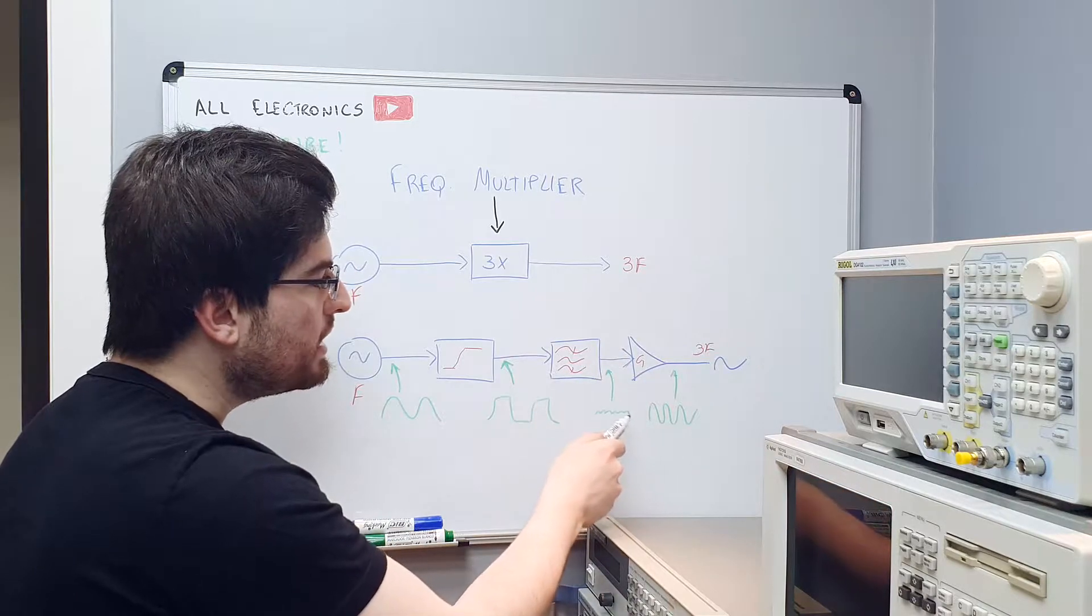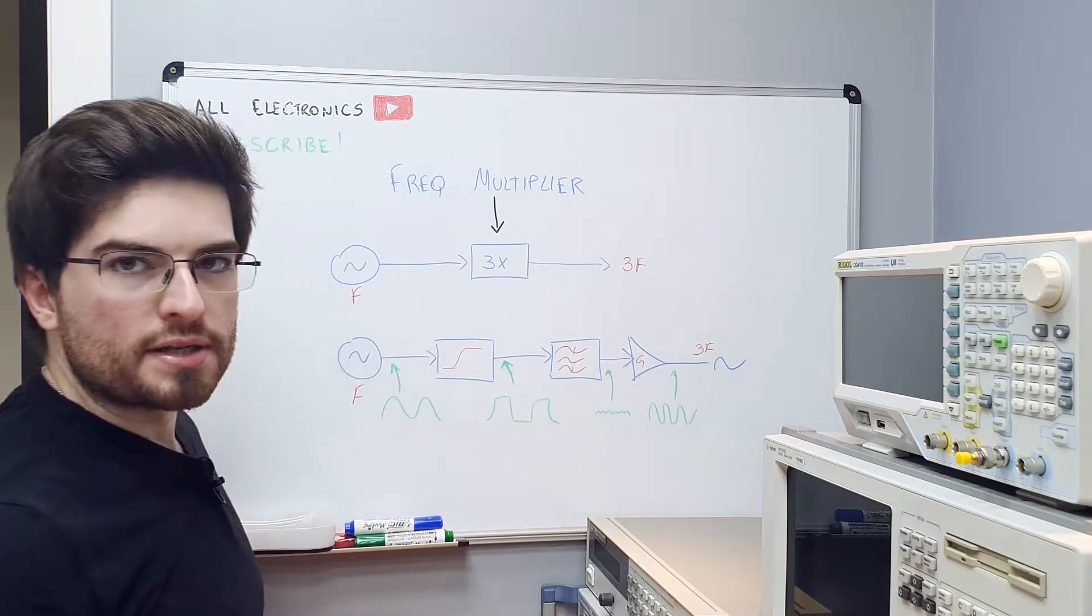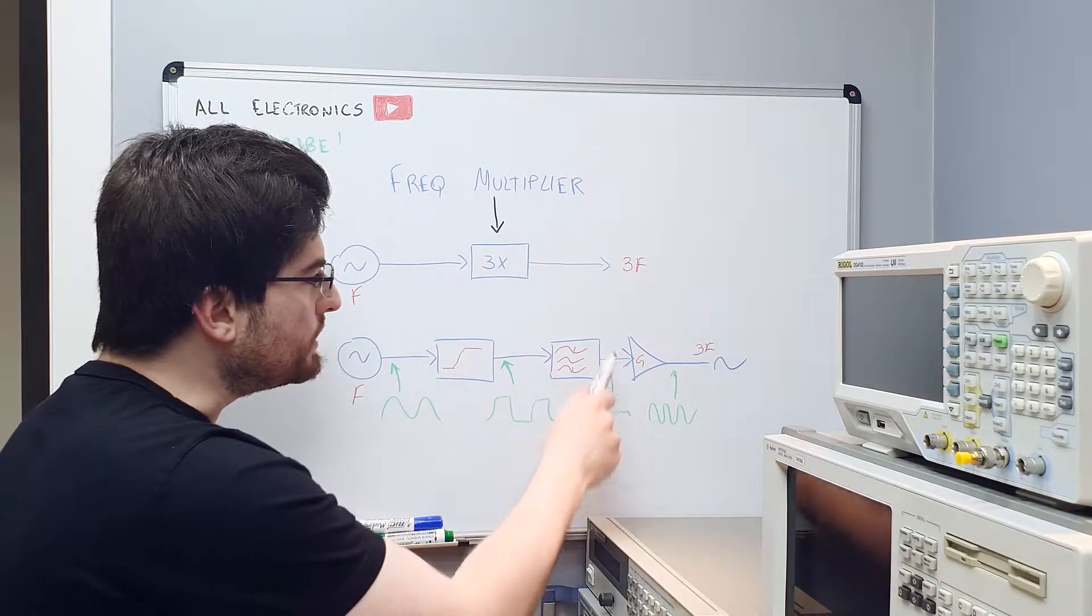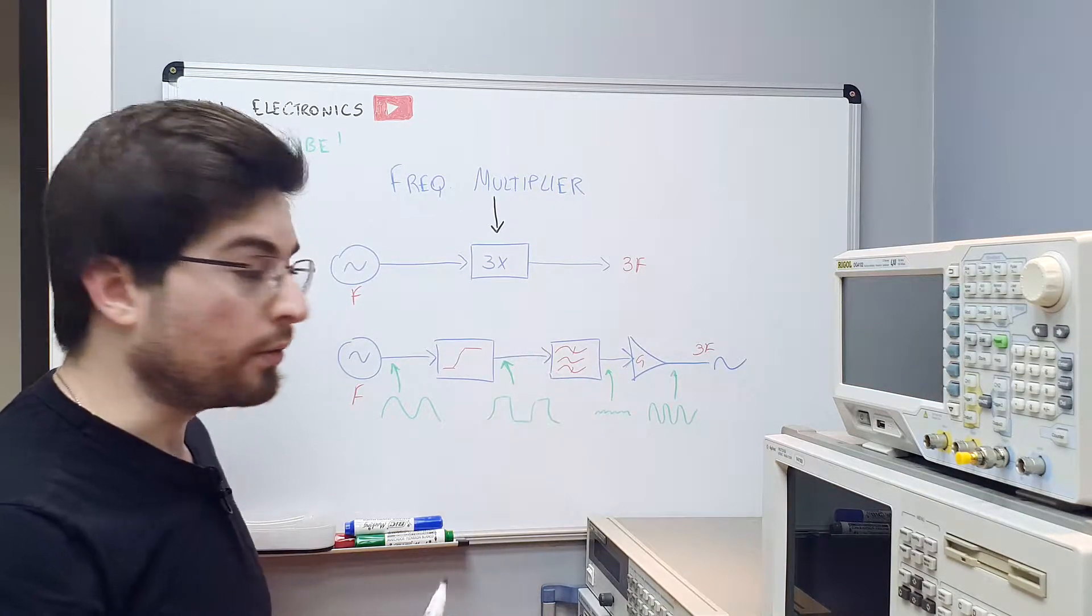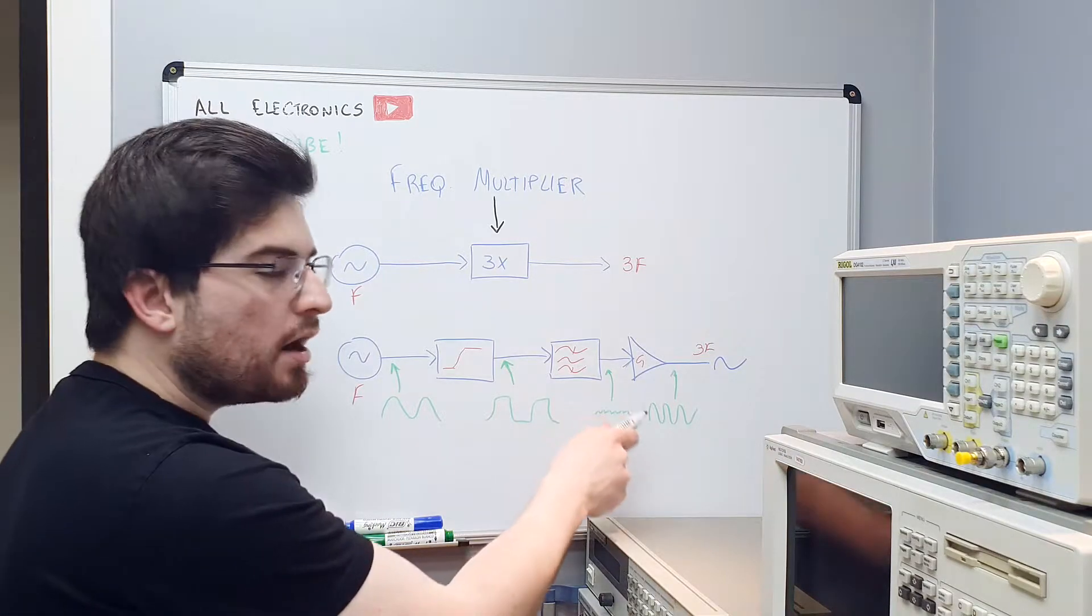In the output of the filter, we're going to have a very small signal that has phase coherence with the input signal and has triple the frequency because it's the third harmonic of the input frequency. Now we can use a linear amplifier to amplify this small signal here and get the output frequency. This is very interesting because if we use a filter here with a high Q, a very high quality factor, we're going to have on the output a very linear sinusoidal signal and when amplified by a linear amplifier the output will be a sinusoidal signal with very low distortion and very low phase noise. As the output signal is a harmonic of the input, the phase noise is almost preserved from the input to the output.